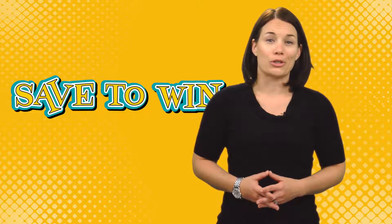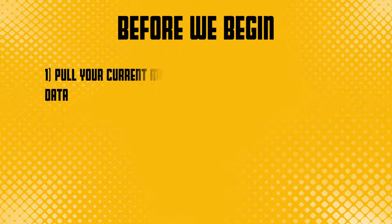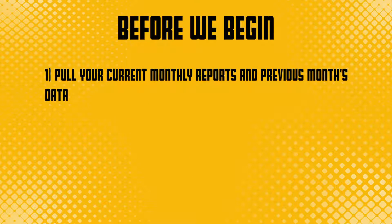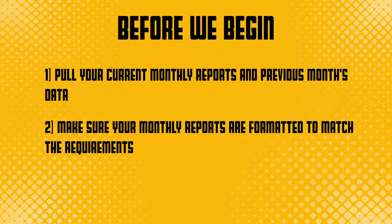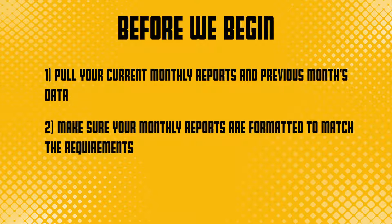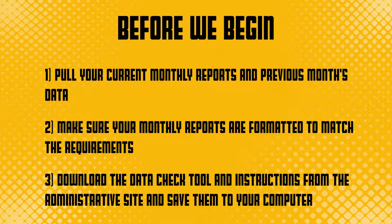Before I begin, let's make sure you've completed these three steps. One, pull your current monthly reports from your data processor. If you have your previous month's data, you'll want to make sure that you have these handy as well. Two, make sure your monthly reports are formatted to match the requirements as listed in the Appendix 3 data requirements document, which can be found on the administrative site under implementation documents. Three, download the data check tool and instructions from the admin site and save them to your computer.